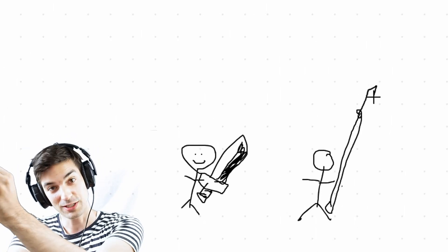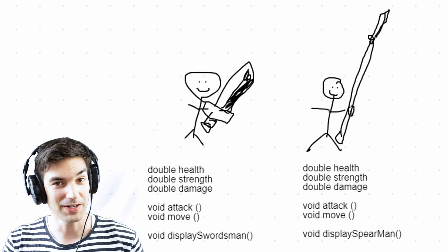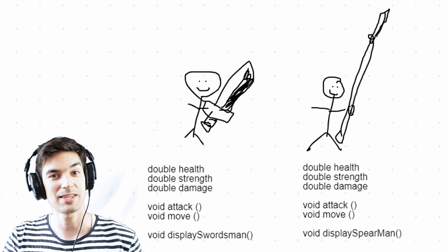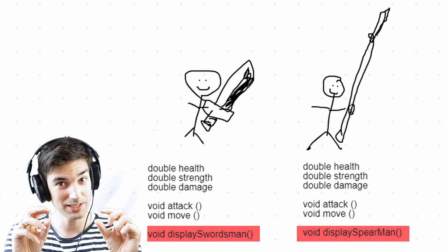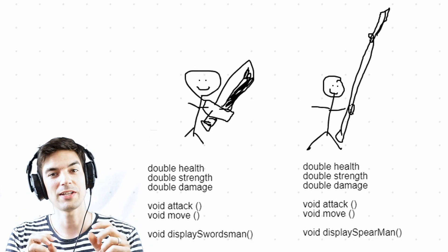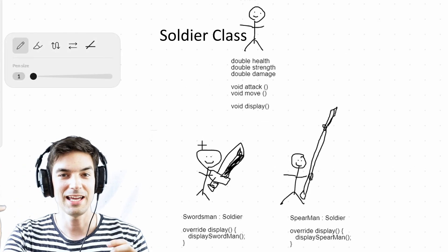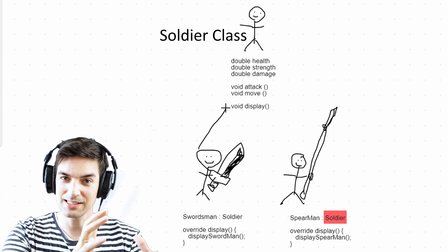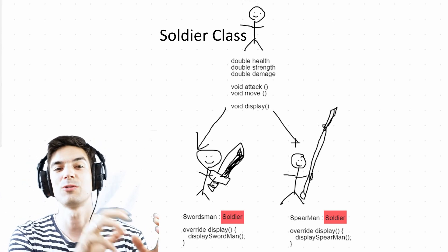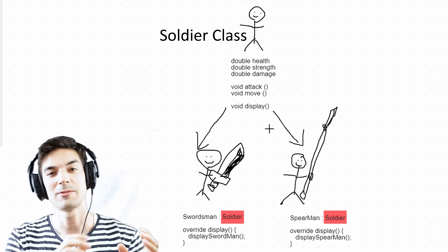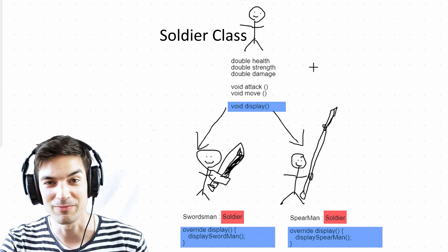A swordsman has a sword, a spearman has a spear. Basically they have the same function — they can attack — but they look different, so the display function would be different. Therefore we can say the spearman inherits the soldier class, the swordsman also is part of the soldier class, and both just override the display function.